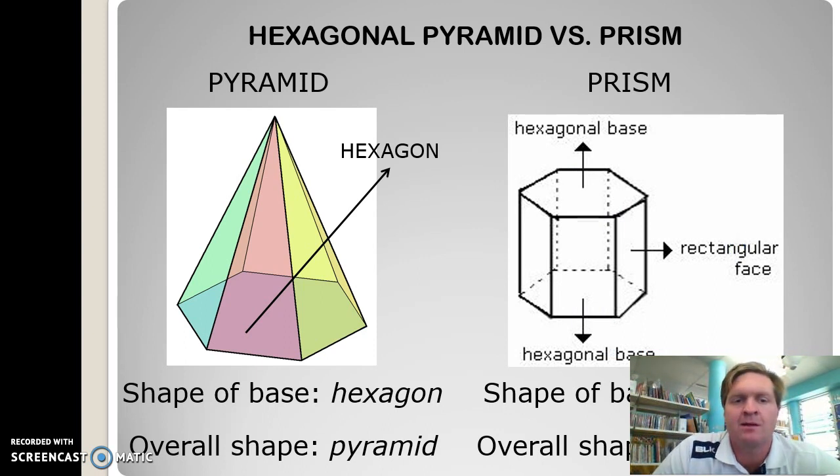I'll let you look over this one. Study it. Try and work out why that first shape is a pyramid and why this shape here is called a prism.